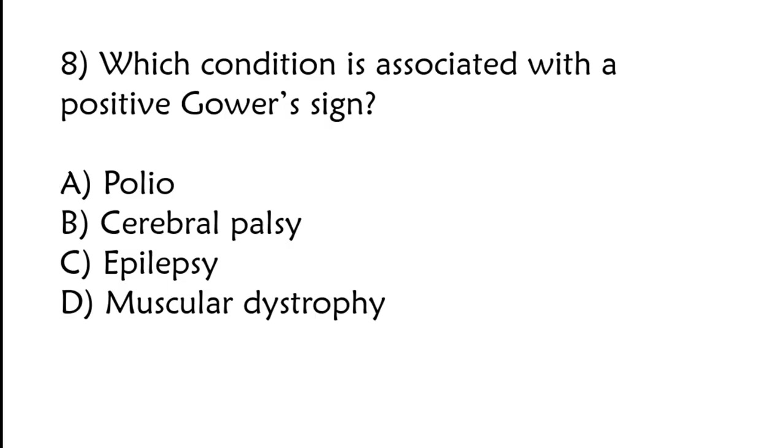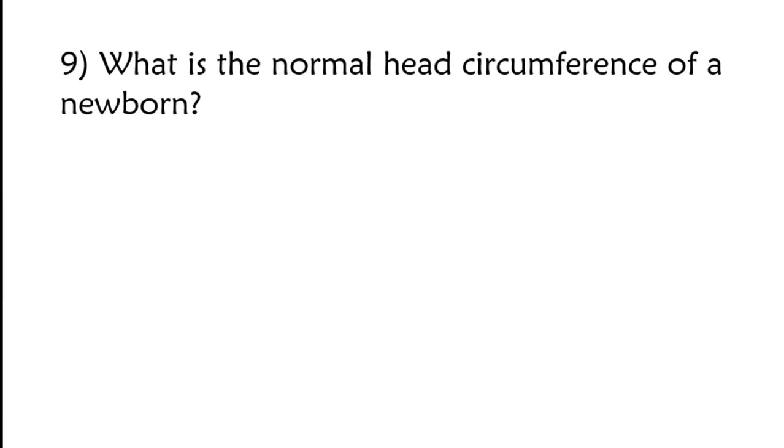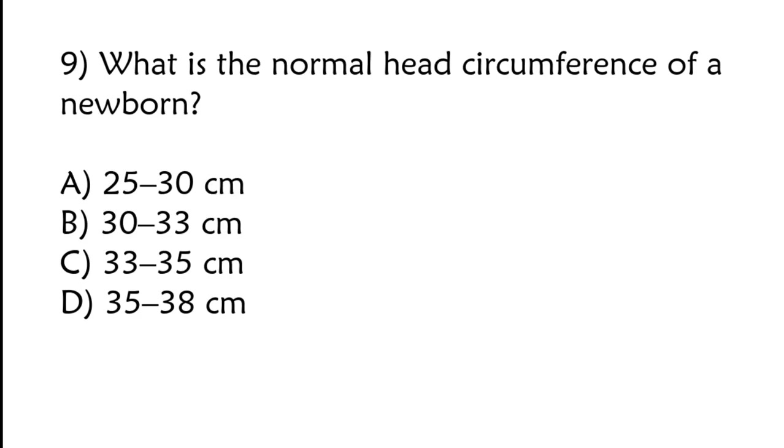Which condition is associated with a positive Gower sign? Polio, cerebral palsy, epilepsy, muscular dystrophy. Correct answer is option D, muscular dystrophy. What is the normal head circumference of a newborn? 25 to 30 centimeters, 30 to 33,